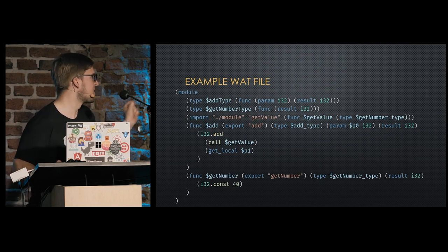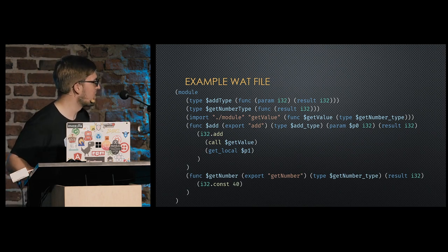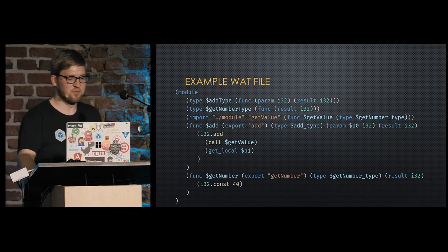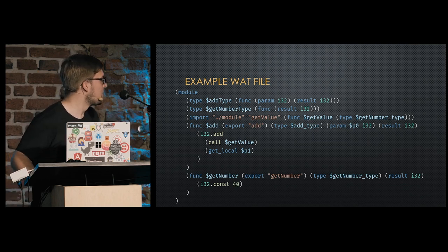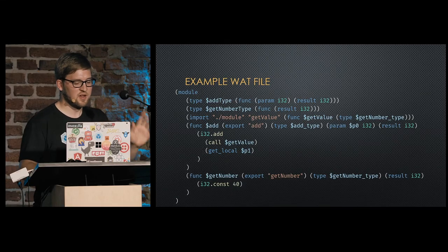Here's an example of the textual format for WebAssembly. It starts with the wrapping for the whole module, then we declare some types — a type for a function getting one integer argument and returning one integer. There's an import section where we import the getValue function from a module, specifying its type. You can also declare your own functions in the code section — for example, a function 'add' that adds two numbers using local variables. That's the basic format of WebAssembly.